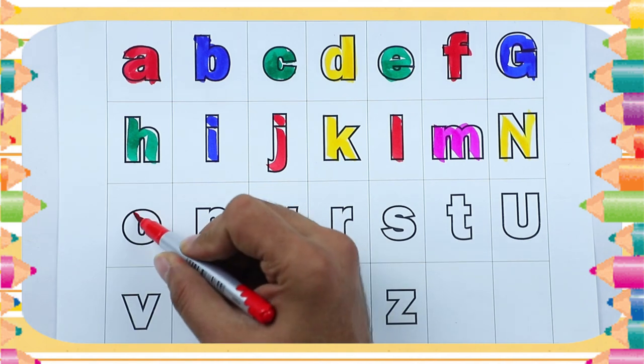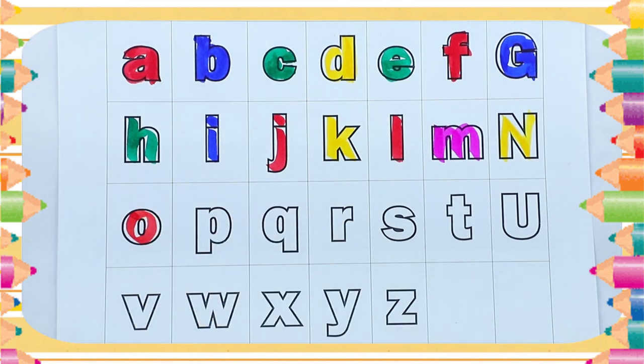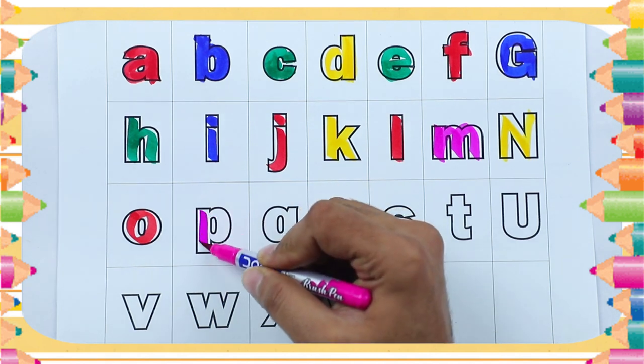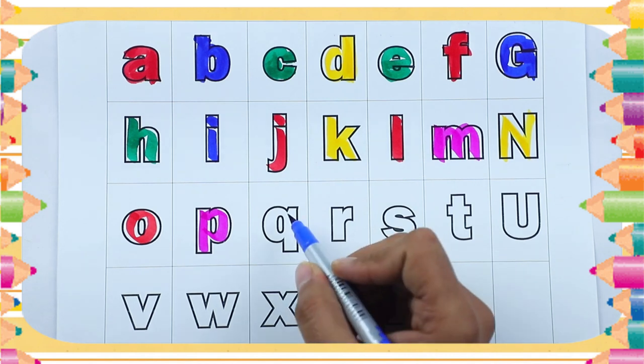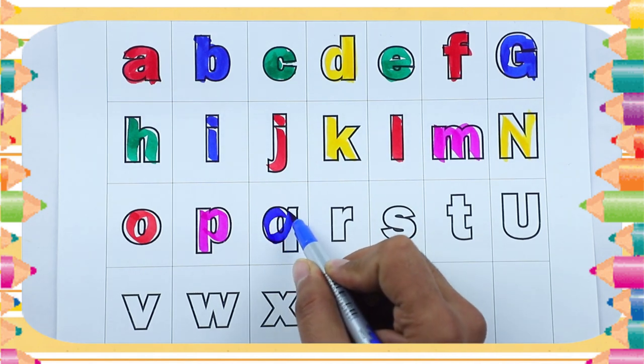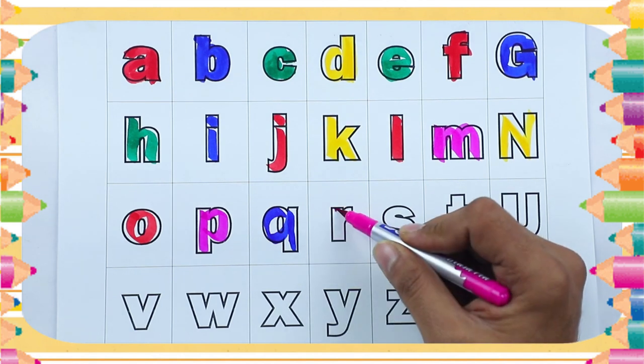Red color, small o, o for octopus. Pink color, small p, p for parrot. Blue color, small q, q for queen.